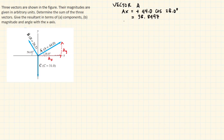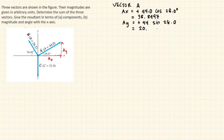For the y component, A sub y, using the same triangle — since it's going upward it is positive — we have 44.0 times sine of 28.0 degrees, which gives 20.6567. Those are the components of vector A; now we'll proceed to vector B.